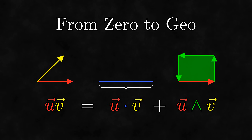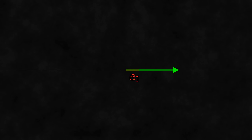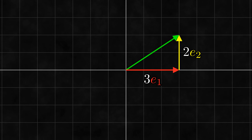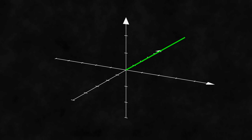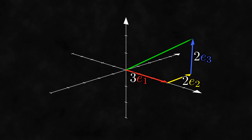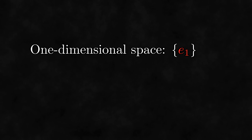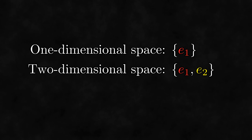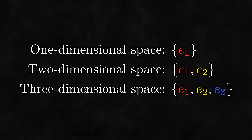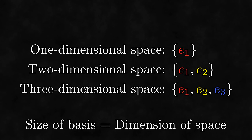To start our discussion on dimension, I want to point out a pattern that you might have noticed. Given a one-dimensional space, we can describe any vector in it using a basis that contains a single vector. In a two-dimensional space, we can describe any vector in it using a basis that contains two vectors. In a three-dimensional space, we can describe any vector in it using a basis that contains three vectors. The size of the basis is the same as the dimension of the space!